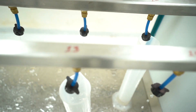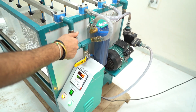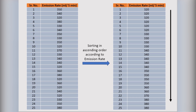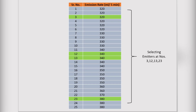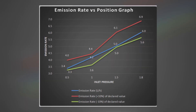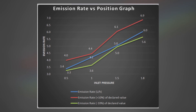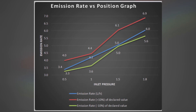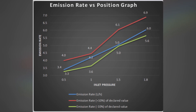In continuation to uniformity of emission rate, a test is performed to determine emission rate as a function of inlet pressure. Step 1: Number the emitters tested in ascending order according to the measured emission rate, with number 1 being the lowest and number 25 the highest. Step 2: Take 4 emitters from the series — numbers 3, 12, 13, and 23 — and measure their change in rate as a function of inlet pressure. Step 3: Plot the curve Q as a function of inlet pressure. Step 4: The curve shall conform to the curve presented in the manufacturer's publication within an allowable deviation of ±10% at any pressure.